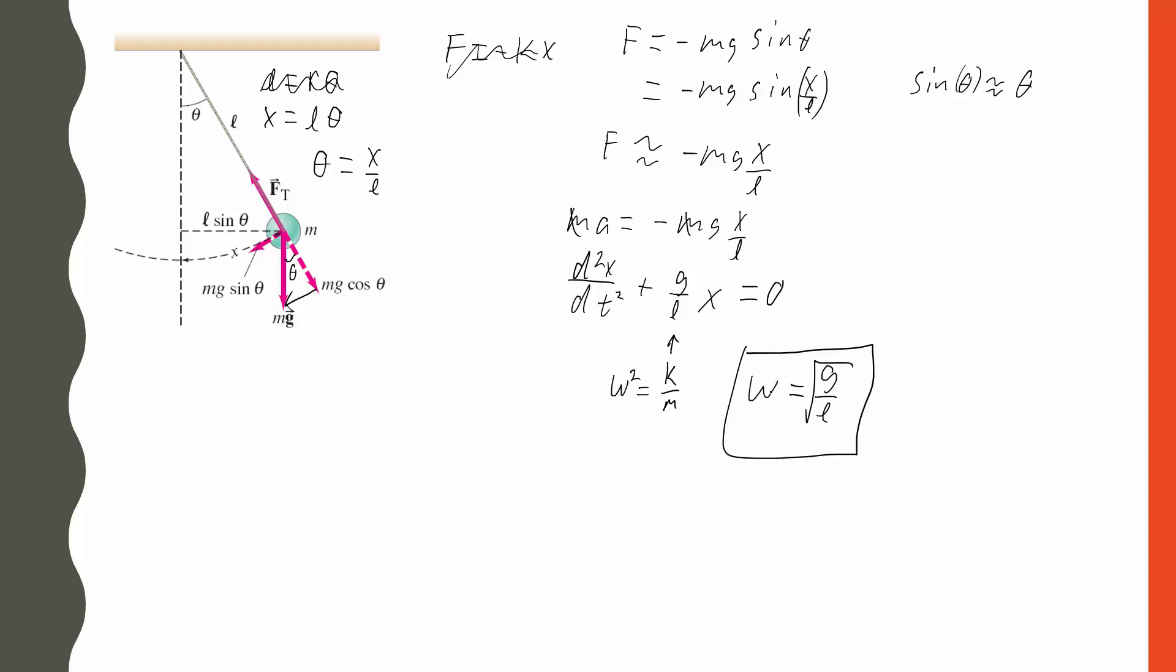We can also write expressions for its displacement as a function of time. We can have theta equals its maximum angular displacement times cosine(ωt + φ), using all the same ideas that we used previously, where φ, our phase angle, is just telling us about the initial condition. If you pull this pendulum back and let it go from rest, then φ would be 0. If you gave it a kick when it was sitting at equilibrium, then you could use a sine function instead, and all of those similar ideas.